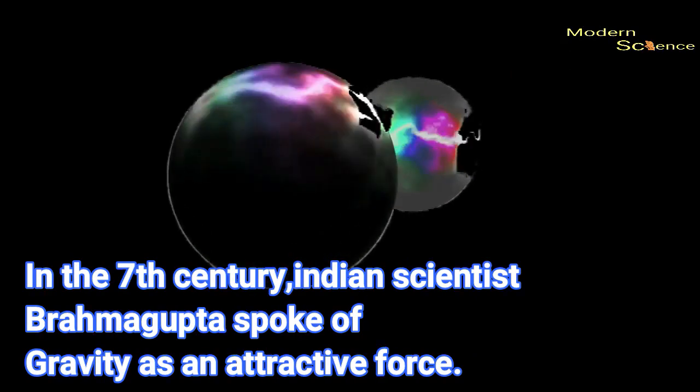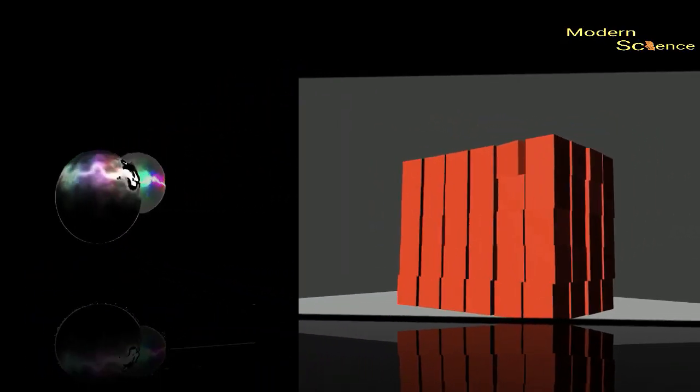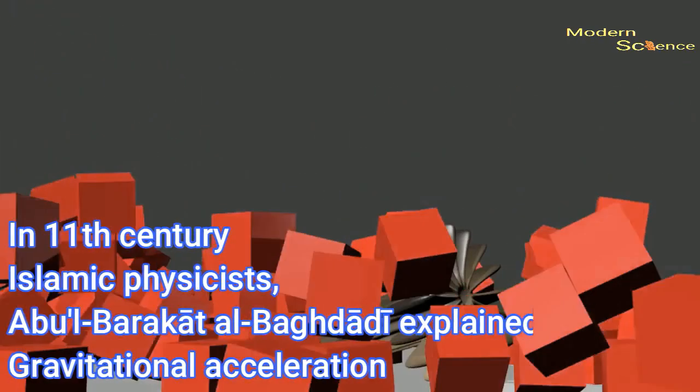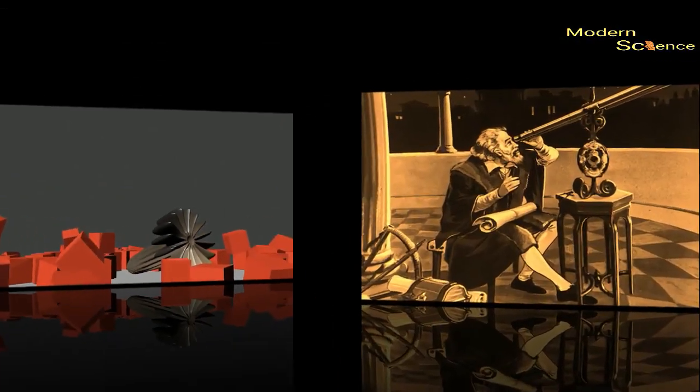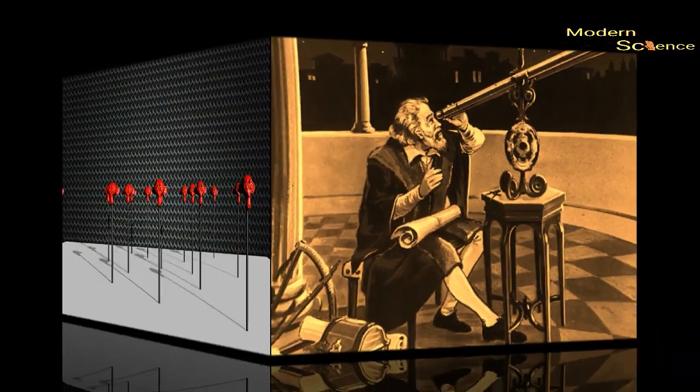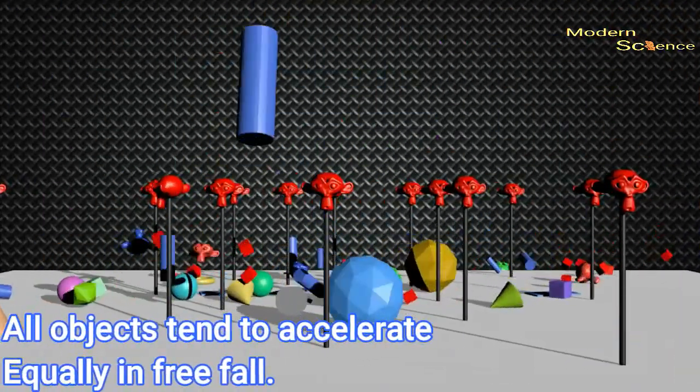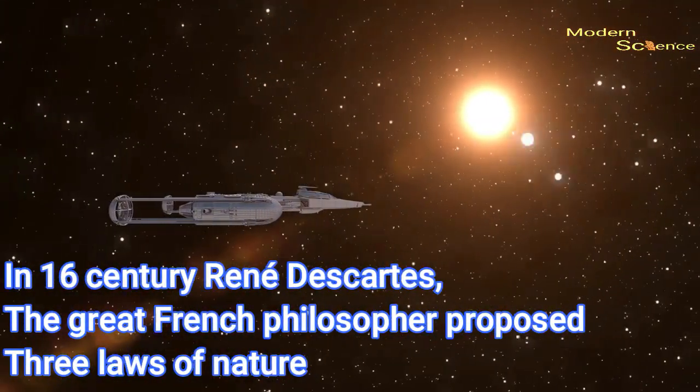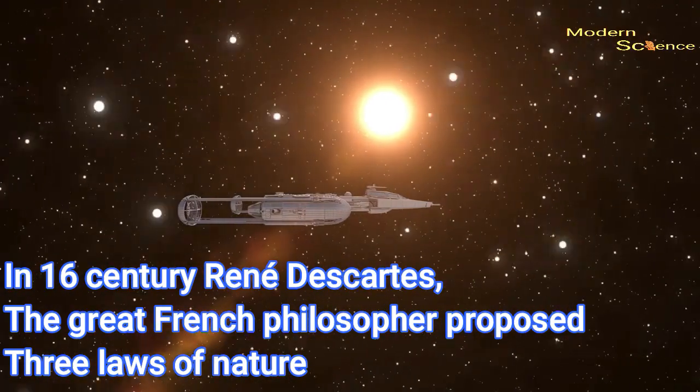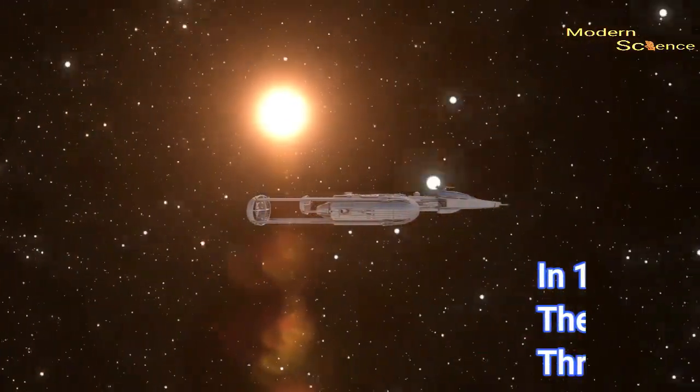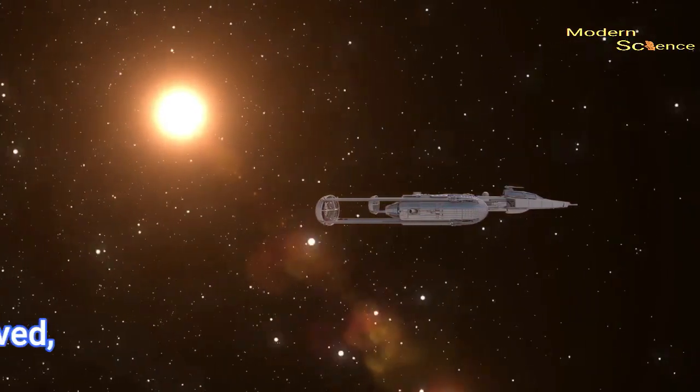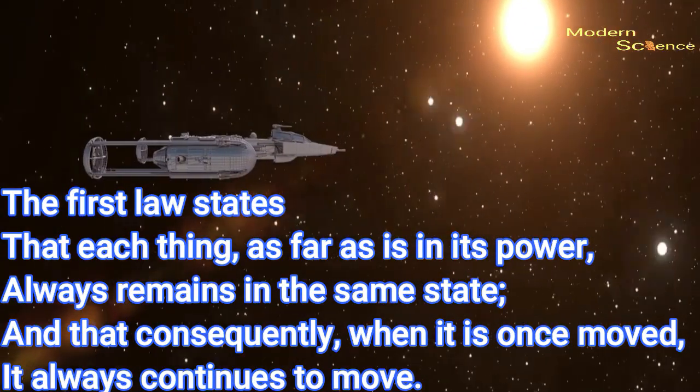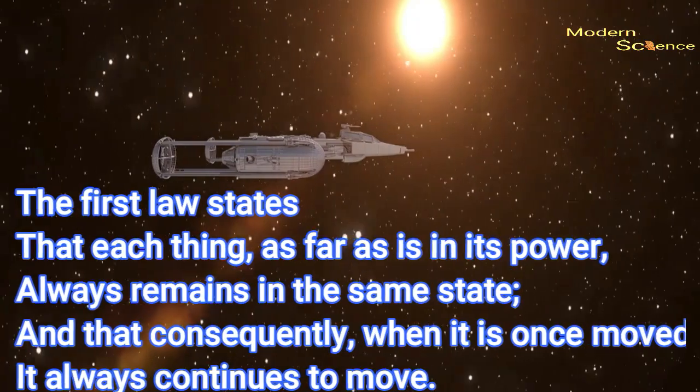In the 7th century, Brahmagupta spoke of gravity as an attractive force. In 11th century, Islamic physicist Abul Barkat al-Baghdadi explained gravitational acceleration. In 15th century, Galileo Galilei found that all objects tend to accelerate equally in free fall. In 16th century, when Rene Descartes, the great French philosopher, proposed three laws of nature. The first law states that each thing, as far as is in its power, always remains in the same state. And that consequently, when it is once moved, it always continues to move.